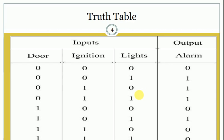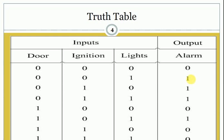The three inputs are door, ignition, and lights. We see that the value of our output alarm is equal to one for minterm one, minterm two, minterm three, and minterm five.